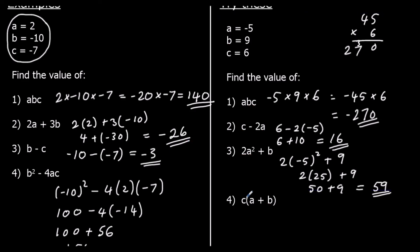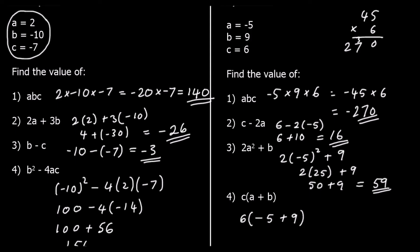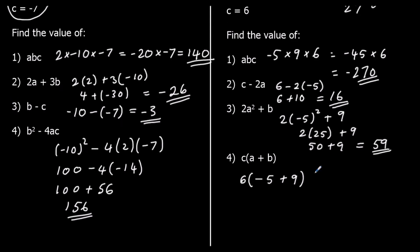And c times (a plus b). So it's 6 times (negative 5 plus 9). We do the bracket first: negative 5 plus 9 is 4. So it's 6 times 4, which is 24.